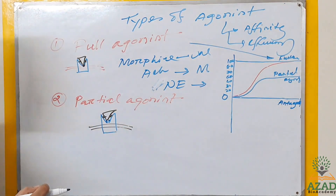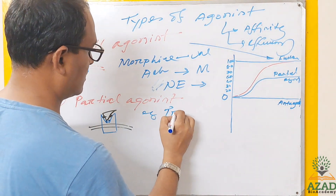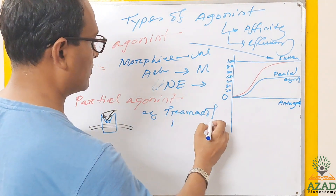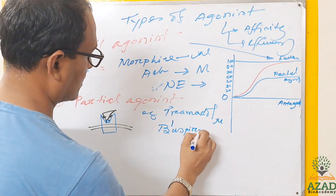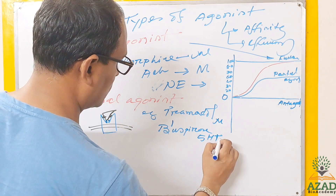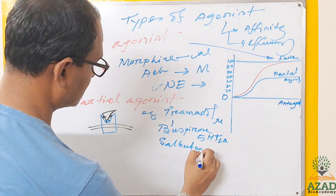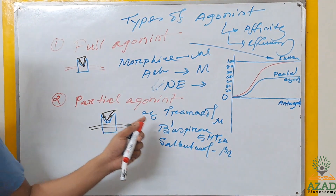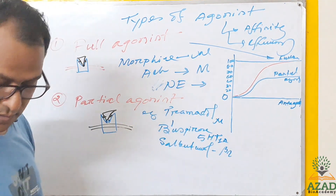Examples of partial agonists include Tramadol, which is related to the mu receptor; buspirone, which is related to the 5-HT 1A receptor; and salbutamol, which is related to the beta receptor. These are examples of partial agonists.